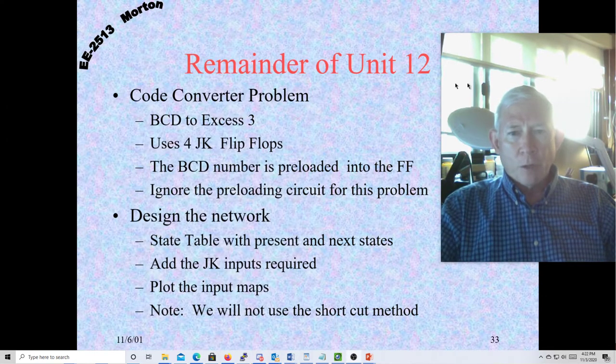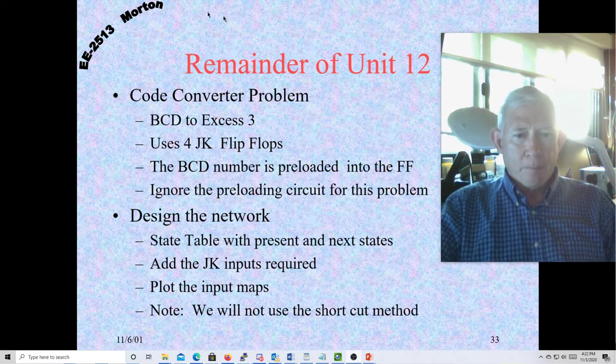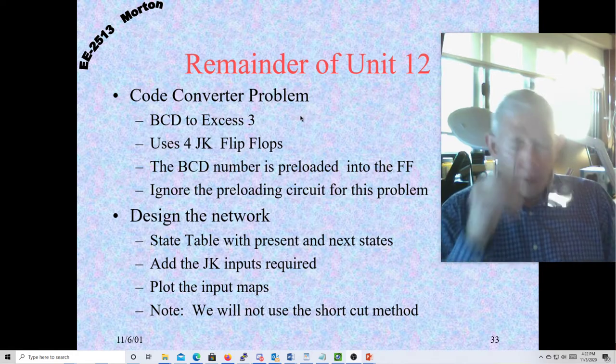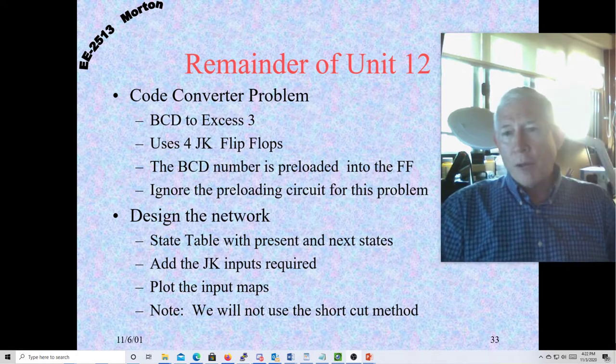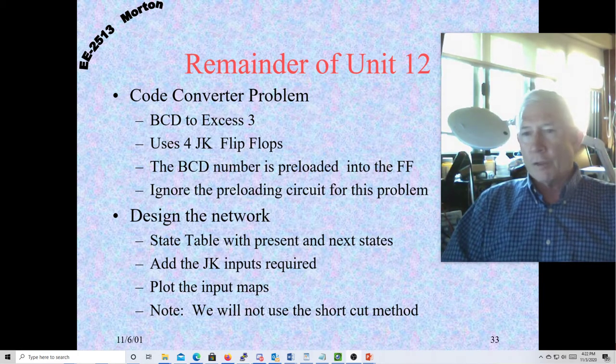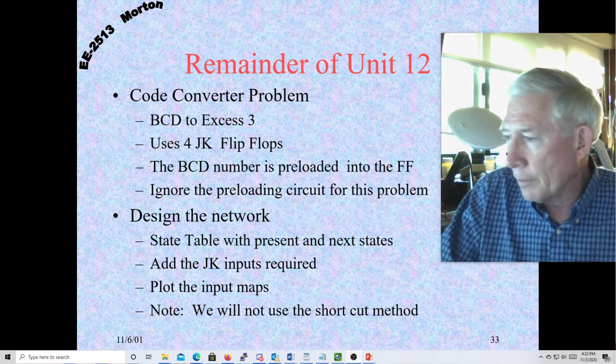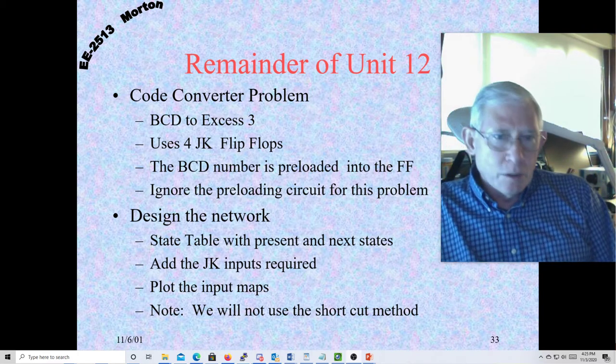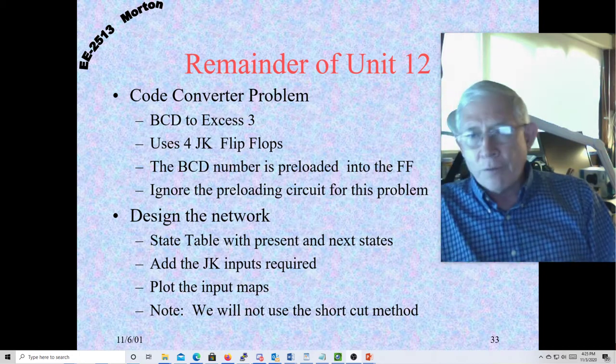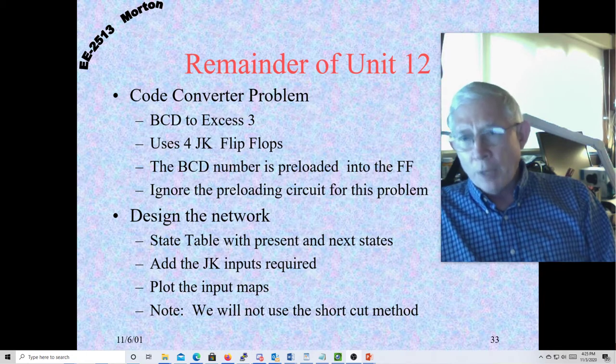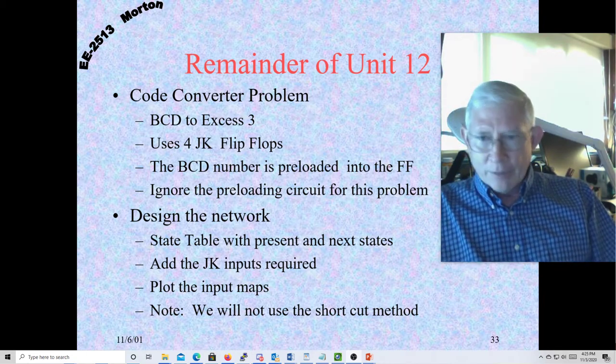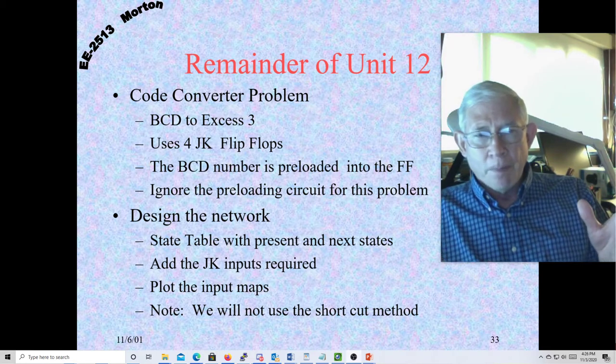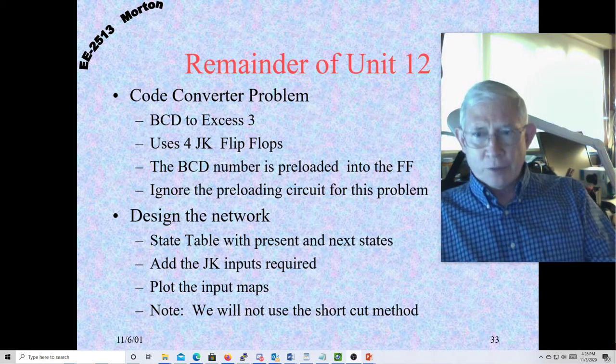So here's where we left off on Unit 12. We're going to talk about the code converter problem. And this is a BCD to XS3 conversion. Now, the XS3 was just another way to do binary coded decimal, basically. And it is kind of goofy. We've already worked this problem one time with a combinational design. You can have it set up so you present the BCD at one end of a network, all combinational, no state machine involved, and then you can immediately output the XS3 code.